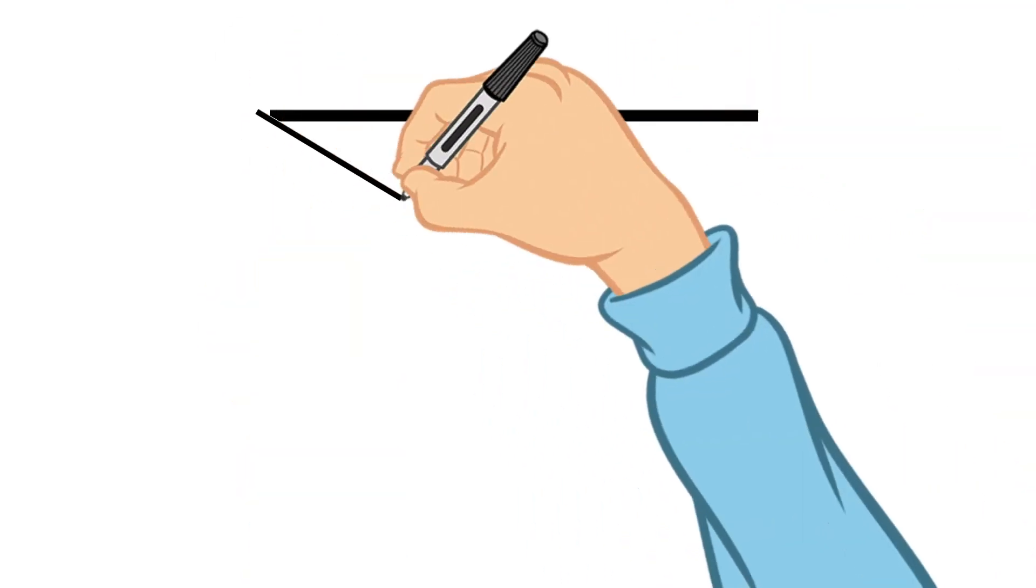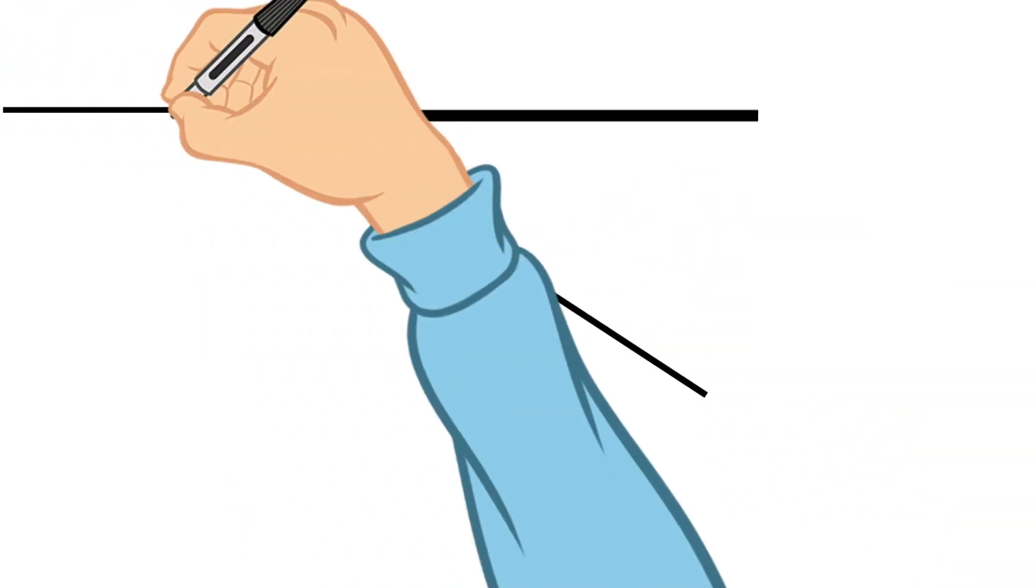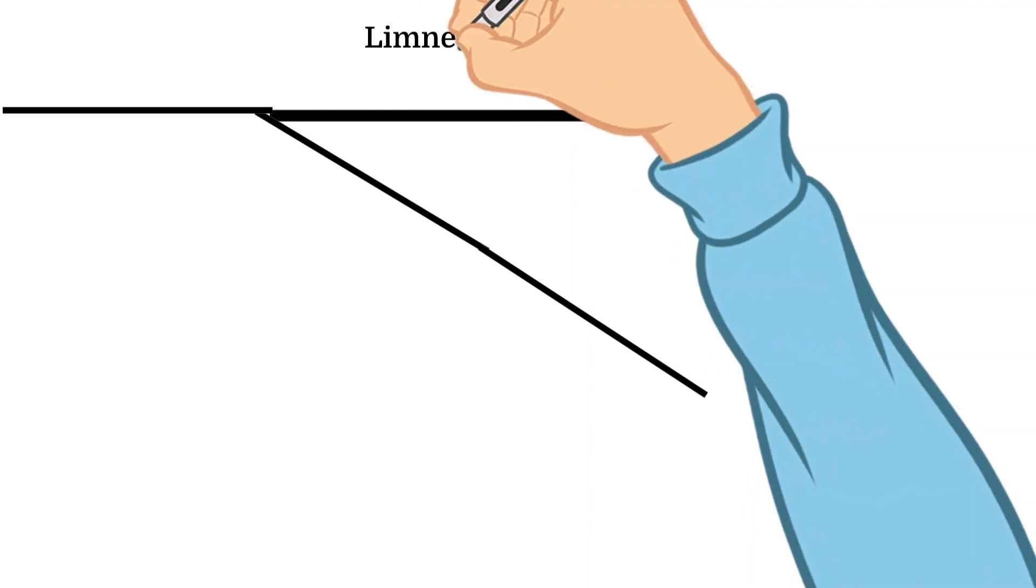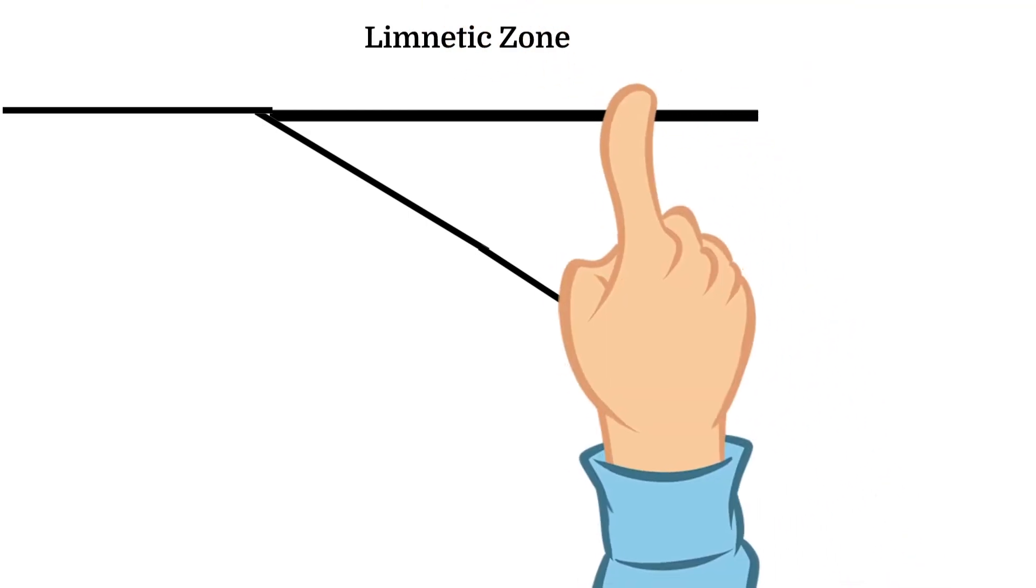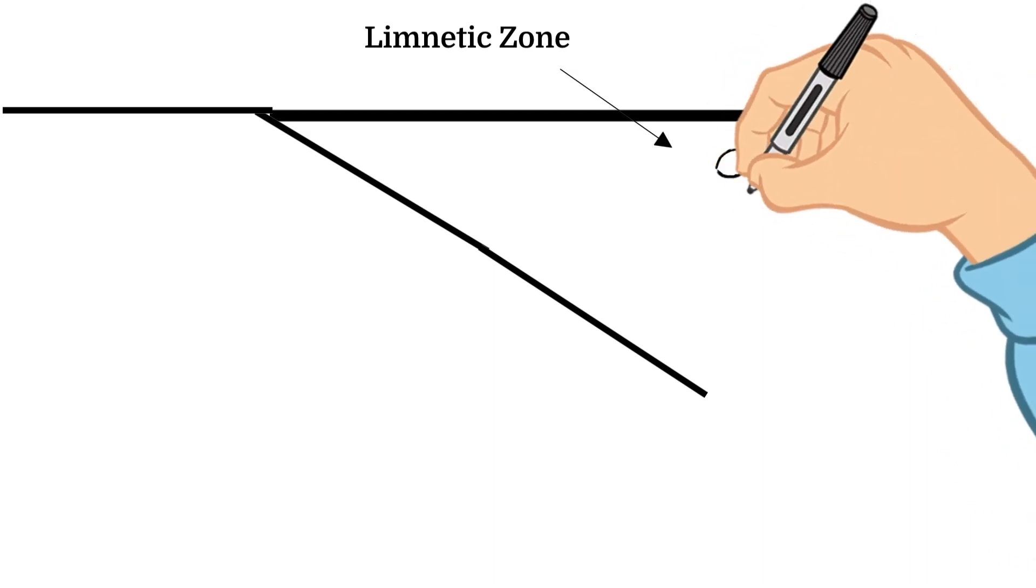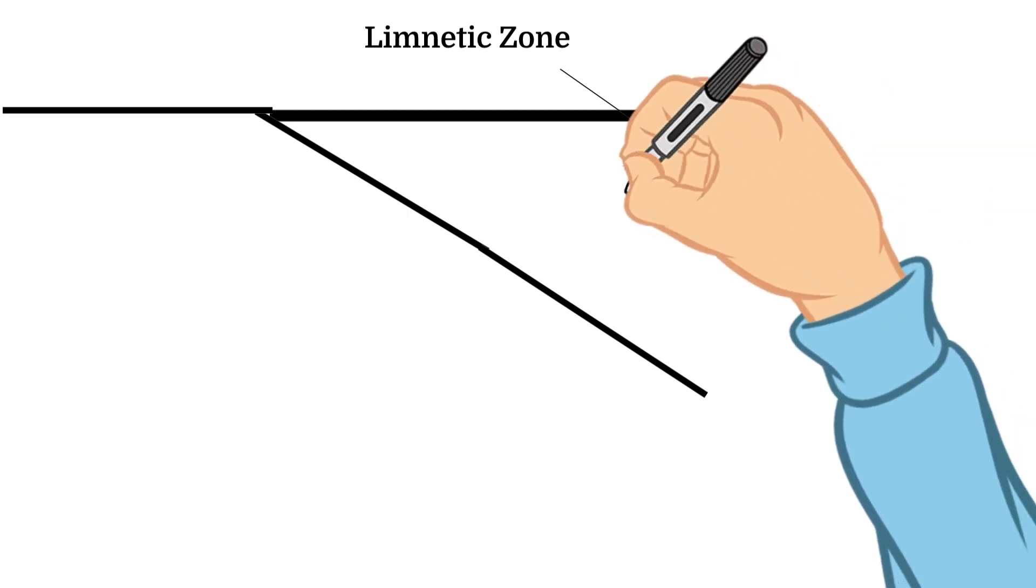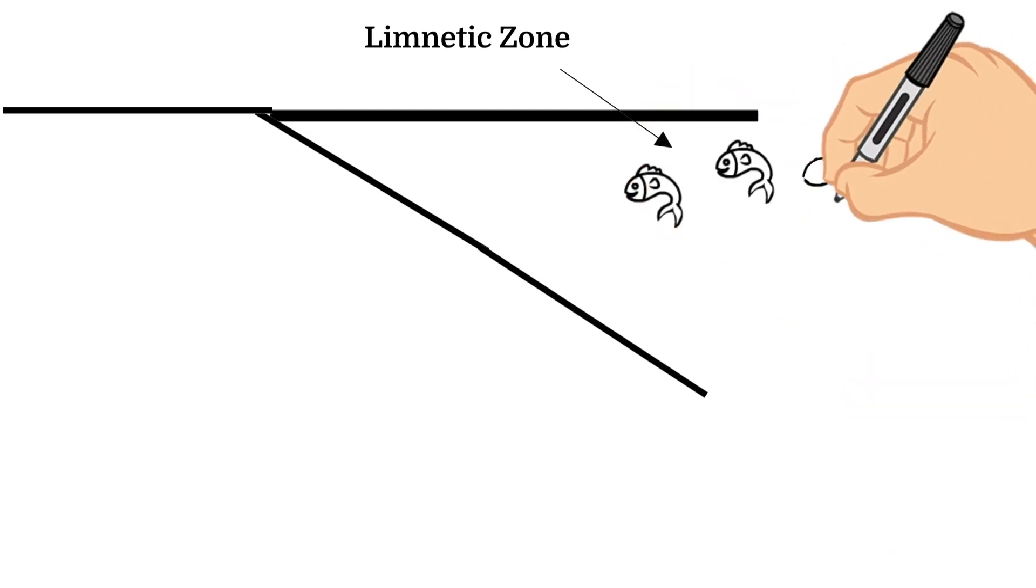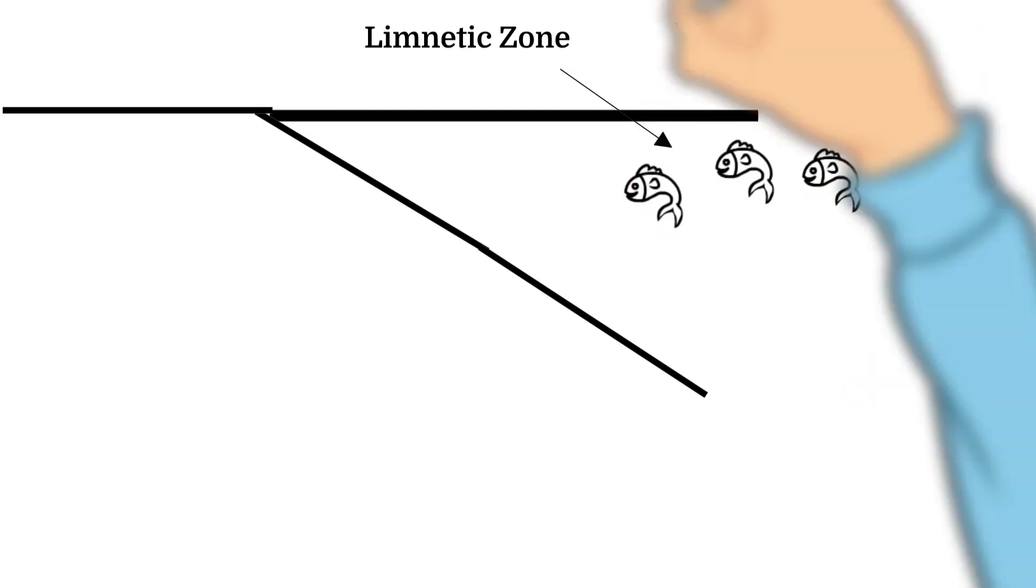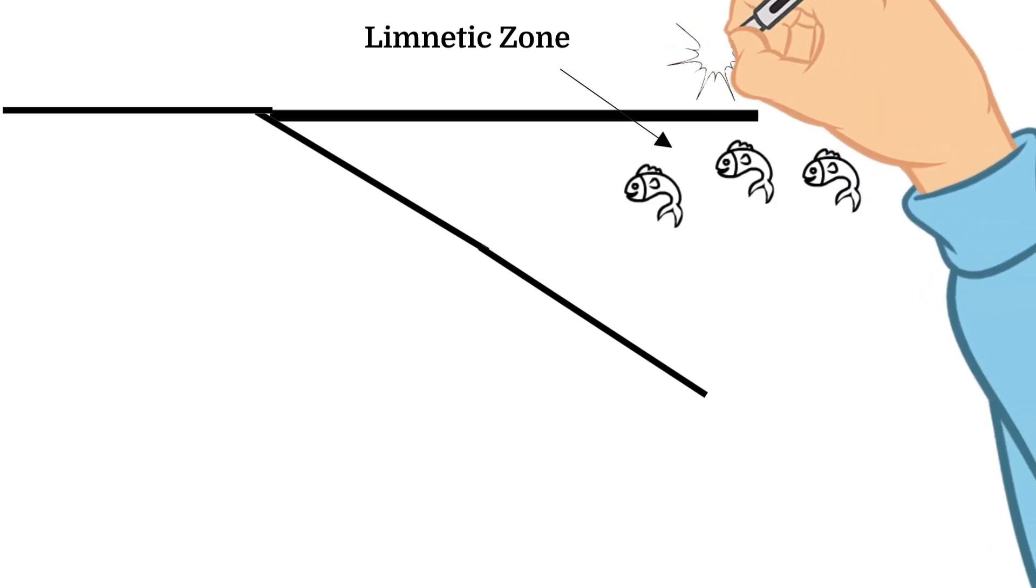The next zone is called the limnetic zone. This zone is close to the surface in the middle of the body of water, surrounded by the littoral zone which we just talked about. This zone is often very bright and is occupied by fish as well as plankton. It is often bright because it is the first zone and is closest to the sun.